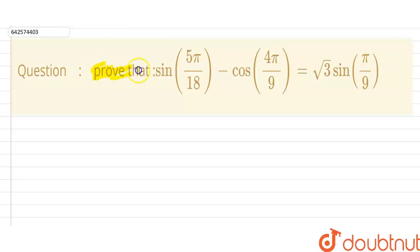The question is, prove that sin 5π/18 minus cos 4π/9 is equal to root 3 sin π/9.